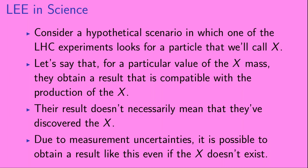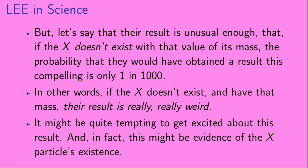Consider a hypothetical scenario in which one of the LHC experiments looks for a particle that we'll call X. Let's say that for a particular value of the X mass, they obtain a result that is compatible with the production of the X. Their result doesn't necessarily mean that they've discovered the X. Due to measurement uncertainties, it is possible to obtain a result like this even if the X doesn't exist. But let's say their result is unusual enough that if the X doesn't exist with that value of its mass, the probability that they would have obtained a result this compelling is only one in a thousand. In other words, if the X doesn't exist at that mass, their result is really, really weird.